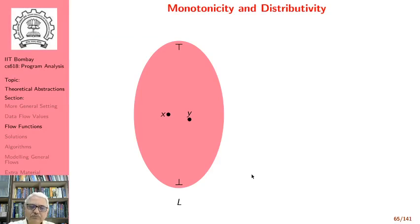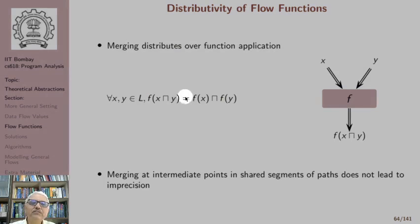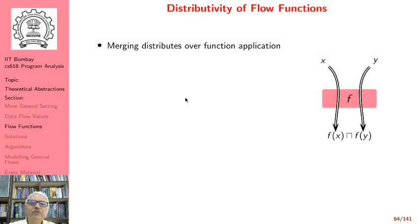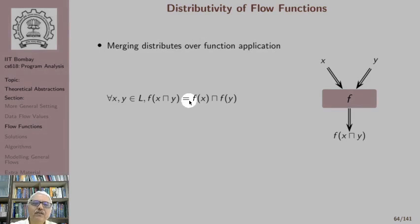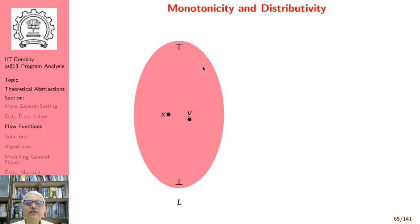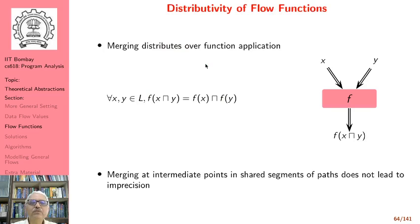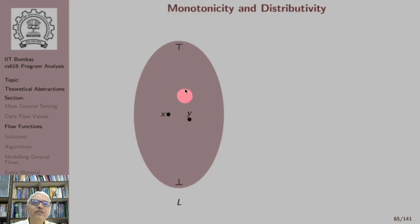Let us visualize monotonicity and distributivity. It is easy to see that distributivity is a stronger condition — any flow function that is distributive is by definition monotonic, because monotonicity requires a weaker-than-or-equal-to relationship which is implied by distributivity. Whereas distributivity requires equality, therefore distributivity implies monotonicity, although the converse is not true. This is a lattice with some arbitrary values X and Y, a top and a bottom.